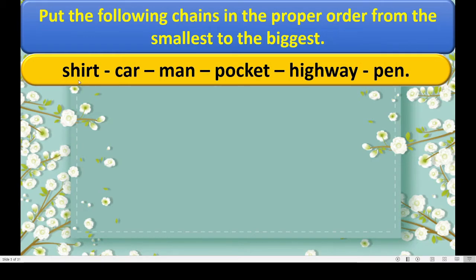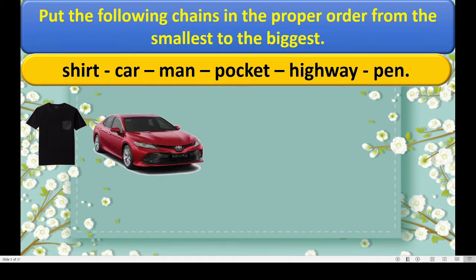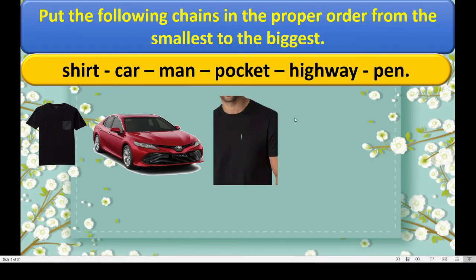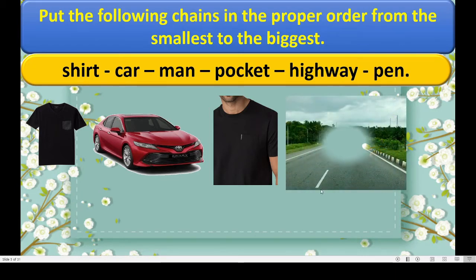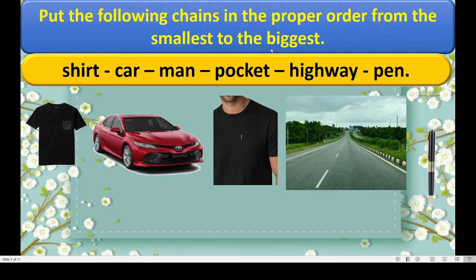Here also we will see the pictures of these words. What is this? Short. See this is shirt. Now this is car. Now man with the shirt and pocket. Then highway — a big wide road, it is called highway. Then pen. So we have: shirt, car, man, pocket, highway, and pen. Now again we have to arrange them in proper order from smallest to the biggest.